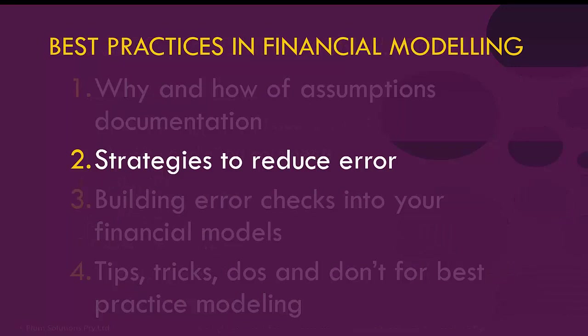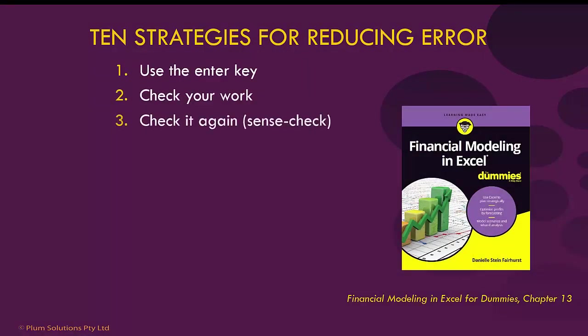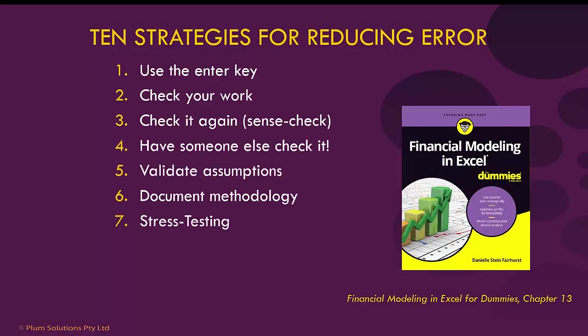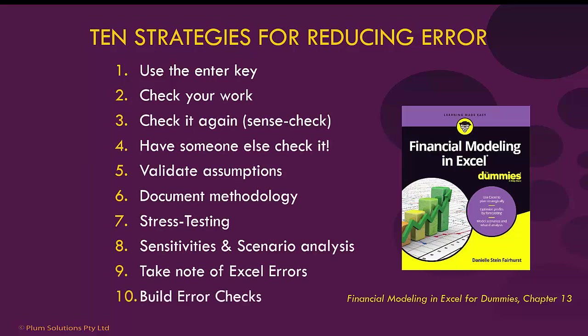So those were the different ways to document assumptions in a financial model. I'd now like to take you through some strategies for reducing error. As I mentioned, having errors in a financial model is probably the number one concern for a financial modeller. I'd like to take you through 10 different strategies — there's actually a whole chapter on this in chapter 13 of the Dummies book — so let's go over those now.